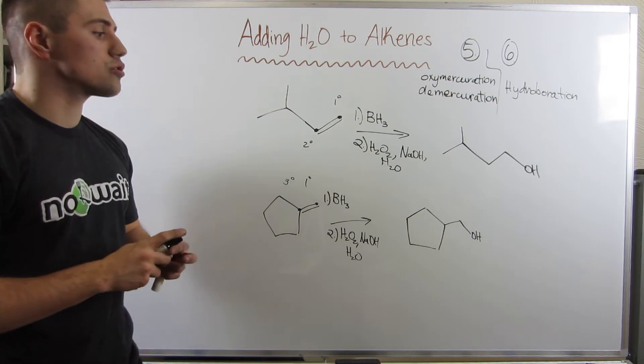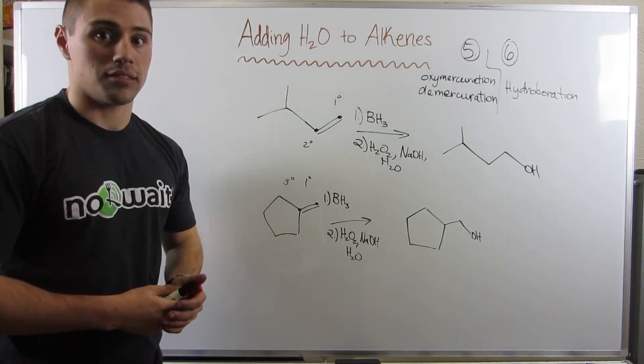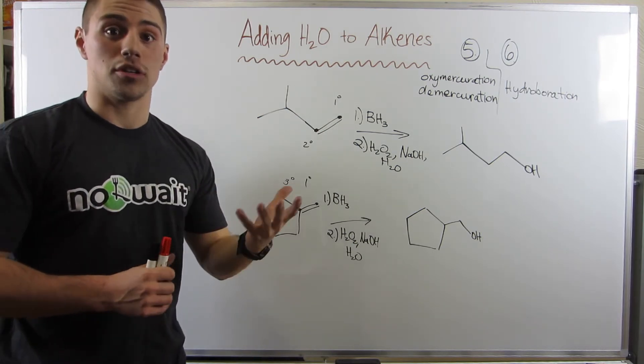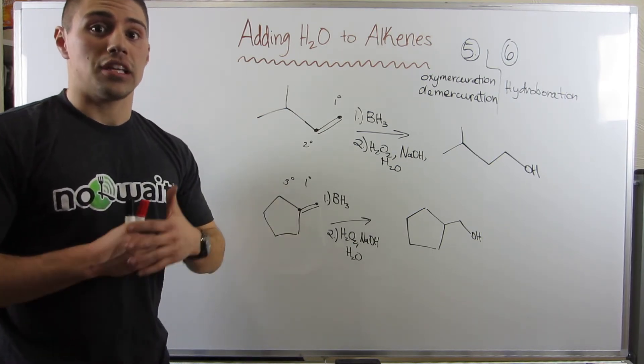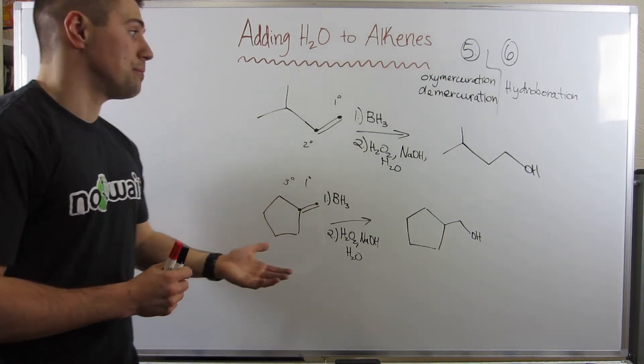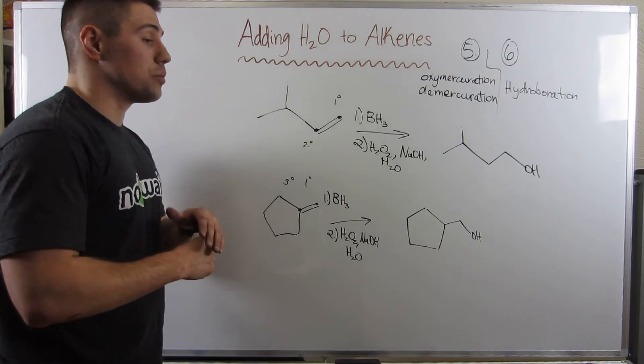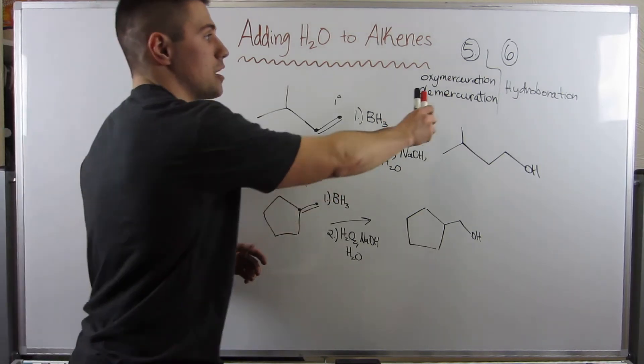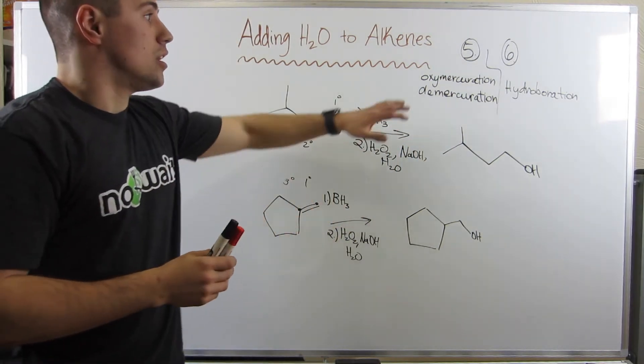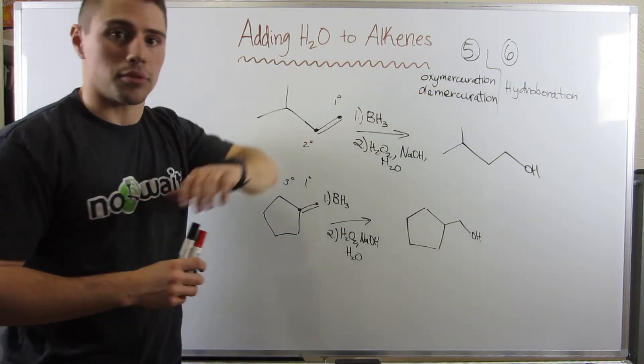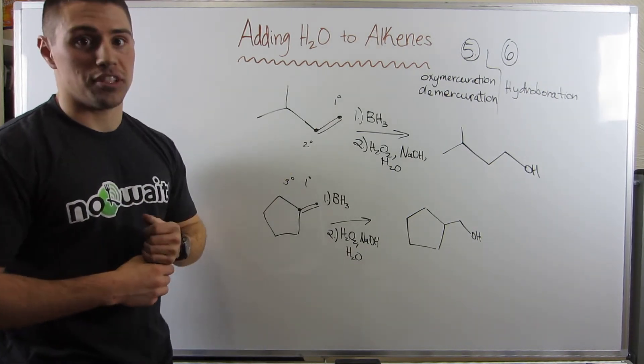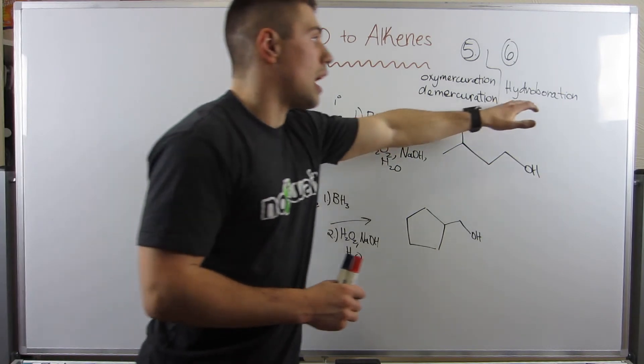So, think about all your tools with adding water to alkenes. You can do H3O+, or H2SO4 cold dilute. That's a carbocation mechanism. It's subject to methyl and hydride shifts. However, if you need, so if that's fine, you can use that. But, if you need a straight up addition, where you want it to go to the most substituted carbon, go for oxymercuration, demercuration. However, if you want it in the least substituted position, then you can do hydroboration.